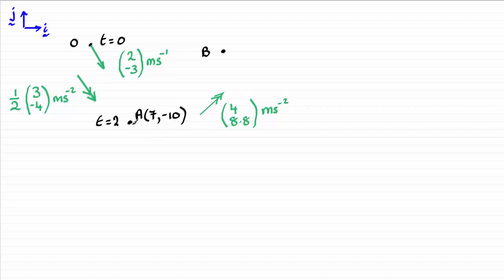OK, so we're told then that when it gets to A, its acceleration changes to 4i plus 8.8j meters per second squared. And it travels to the point B where it's going in a northeasterly direction. And we've got to find out the time then that it takes to go from A to B.